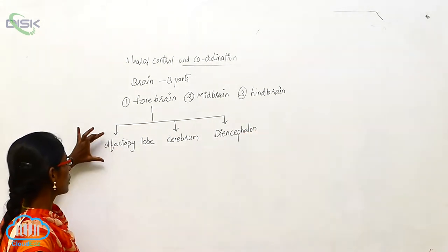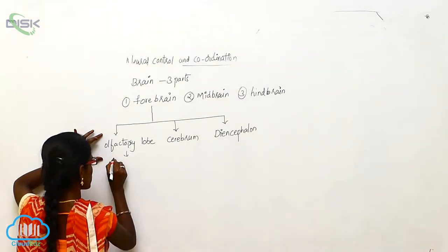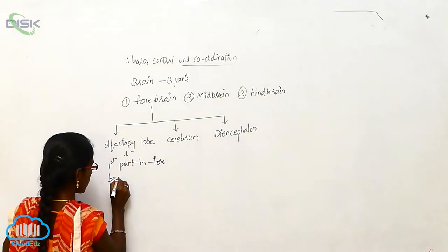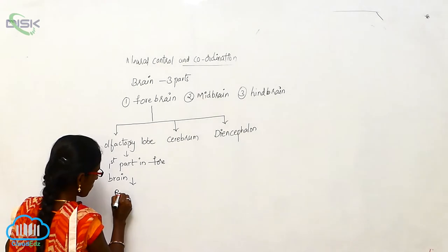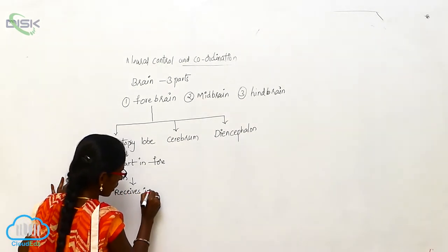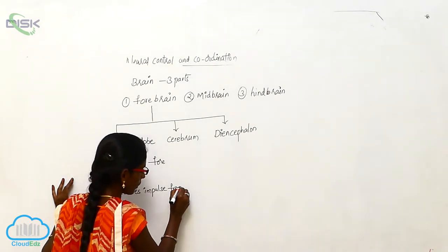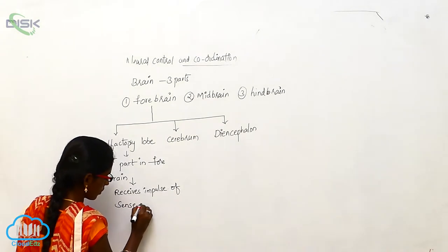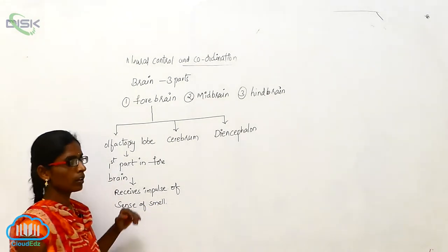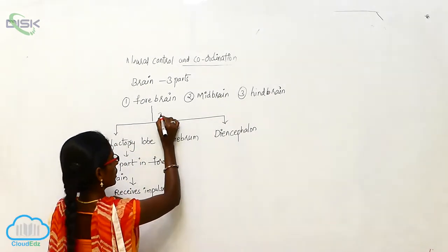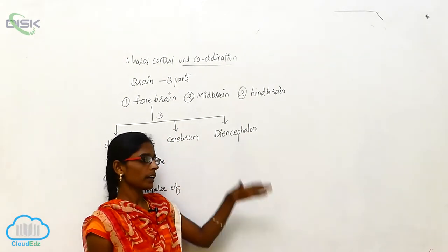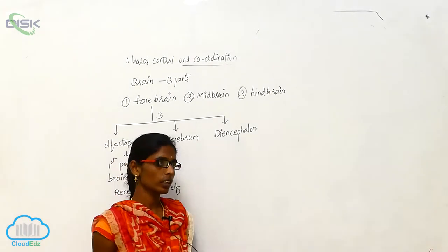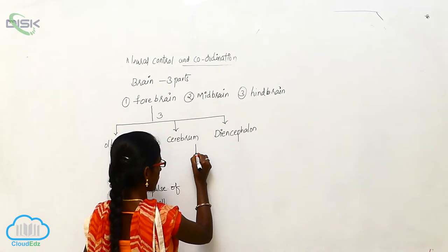The olfactory lobe is the first part of the forebrain. It receives the impulse of the sense of smell. So the forebrain has three parts: the olfactory lobe, cerebrum, and diencephalon.